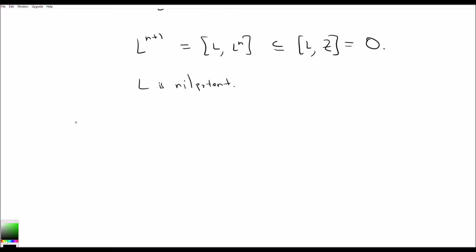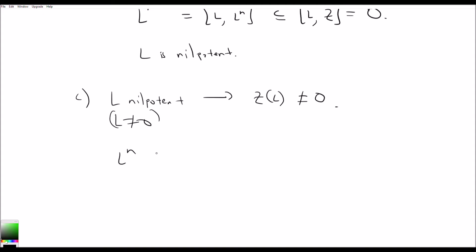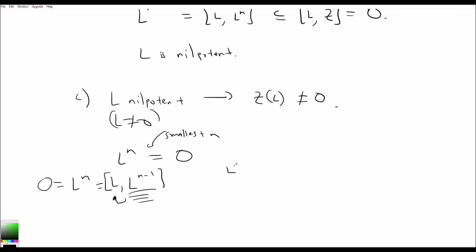The last statement: L nilpotent implies its center is non-trivial, provided L is not equal to 0. Suppose n is the smallest n such that L to the n equals 0. Then L to the n−1 bracket L equals L to the n equals 0, so everything in L to the n−1 commutes with everything in L. Since n was the smallest such value, L to the n−1 is non-zero and is contained in the center, giving us a non-trivial center.